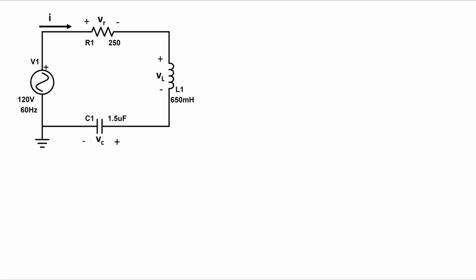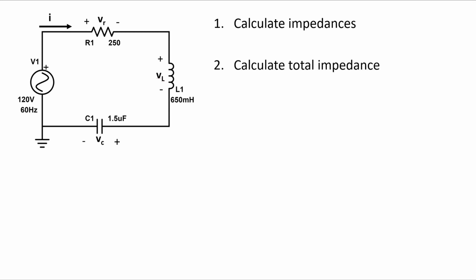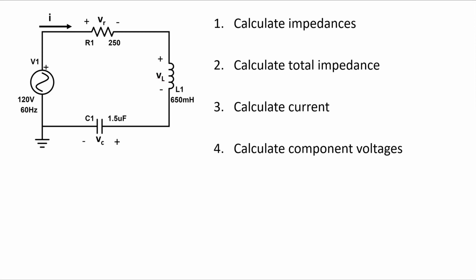In order to do that, we will first calculate the impedances of the individual components, then calculate the total impedance, calculate the current using that total impedance, and then finally calculate the voltages across the individual components.